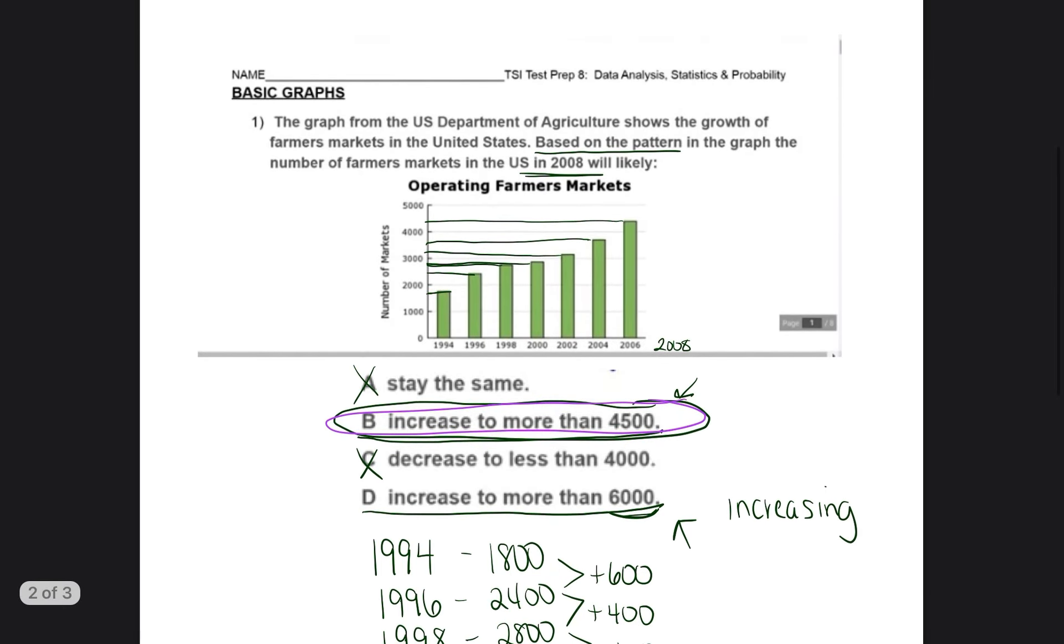So just as a review for this, they asked us to look for the pattern. Based on that pattern, what's most likely to happen in 2008. We were able to see that the pattern was increasing. So that was good to know. And it was also good to see about how much it increased each year, which was between 100 and 600. So we were able to choose the correct answer, which is B.